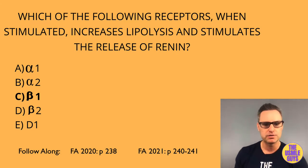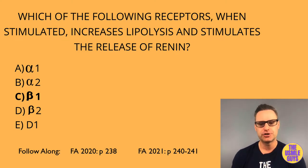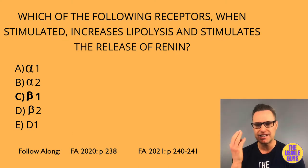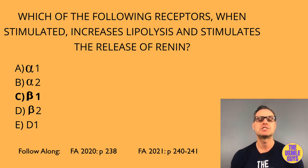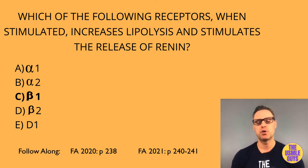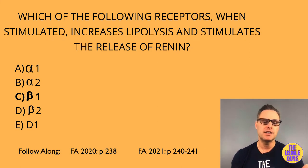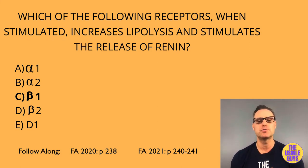Now let's look at the receptors: adrenergic, cholinergic, dopamine, histamine, and vasopressin receptors. For adrenergic receptors — alpha-1, alpha-2, beta-1, beta-2, and beta-3 — we can remember which G proteins are used with QISSS: alpha-1 uses GQ, alpha-2 uses GI, and all three beta receptors — beta-1, 2, and 3 — all use the GS subunit.